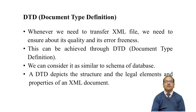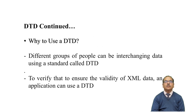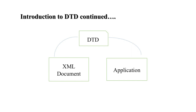DTD is similar to the schema of a database. It depicts the structure, the legal elements, and the properties — meaning attributes — of the XML document. Different groups of people interchange data using a standard called Document Type Definition. Whenever we want to verify the validity of XML data, we use DTD. An XML document being interchanged to some application will be validated through DTD.